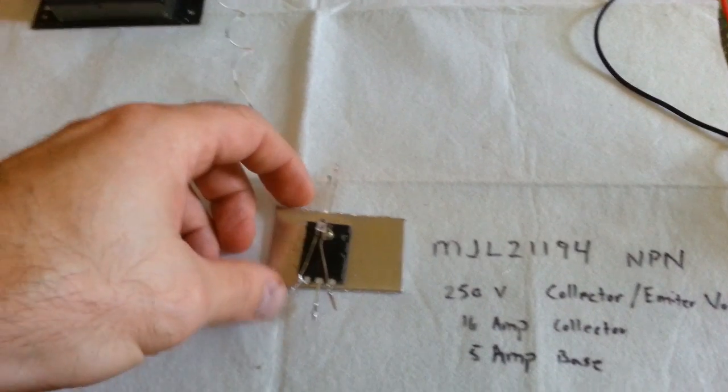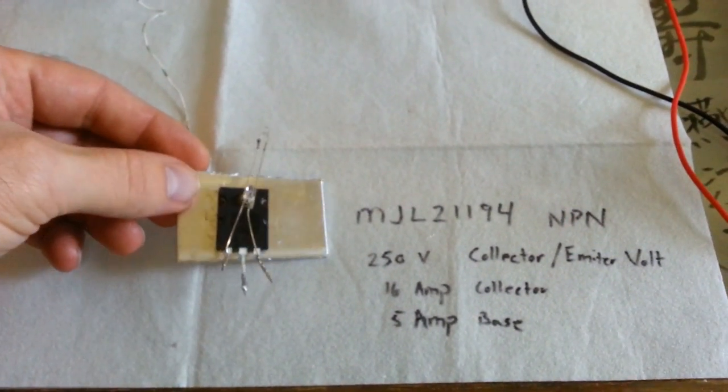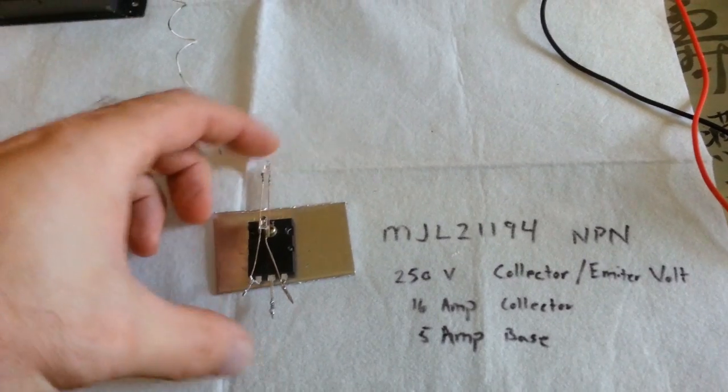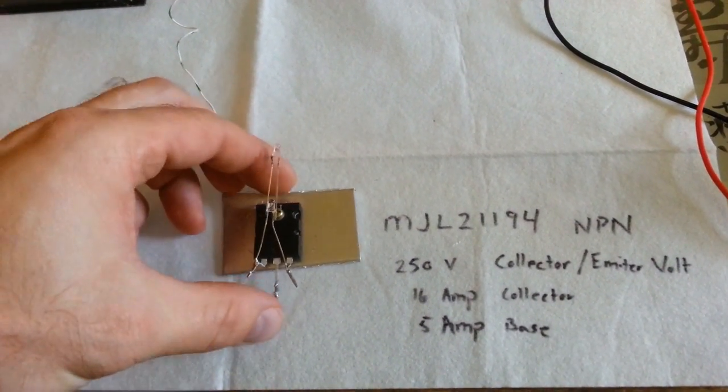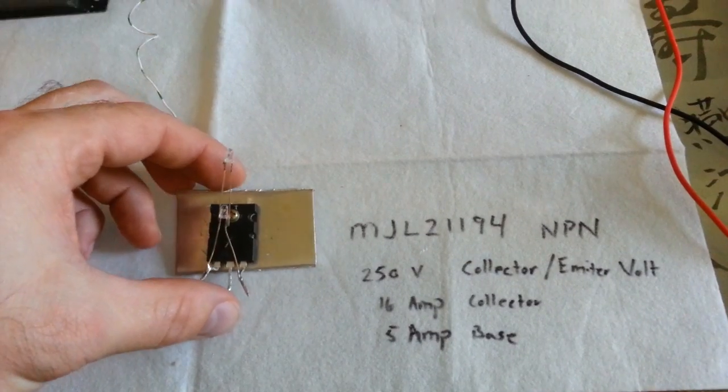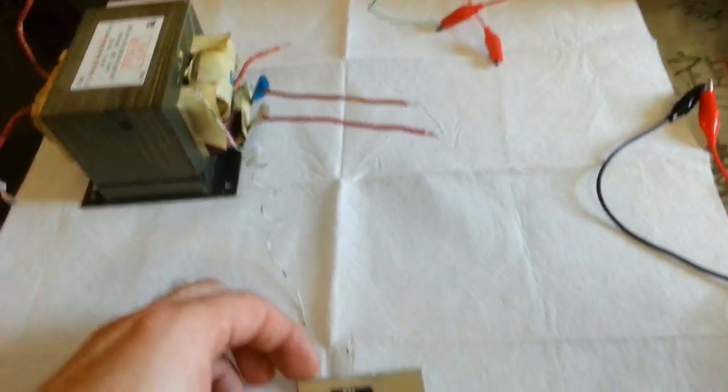I don't even need this heat sink on it, but there it is. If you don't have this transistor, it'll still work on your 2N3055s. Pretty much any higher voltage NPN will run this circuit without any problem at all.